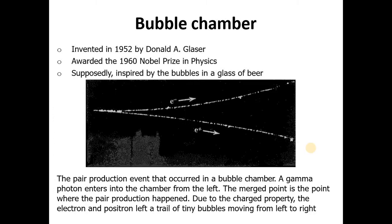You can see that a scattered atomic electron is electron and positron, while invisible gamma ray photons can't deflect because they are neutral, a more energetic electron-positron pair. The pair production event that occurred in a bubble chamber: a gamma photon enters into the chamber from the left. The merged point is the point where the pair production happened. Due to the charge property, the electron and positron left a trail of tiny bubbles moving from left to right. You can see electron and positron and this is the junction point of pair production where it happened.